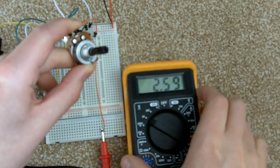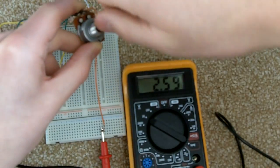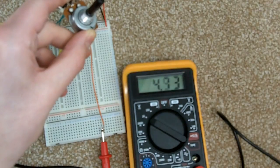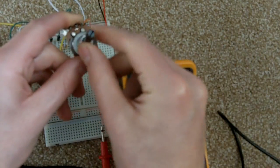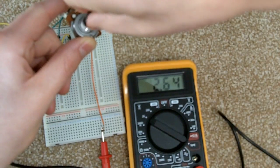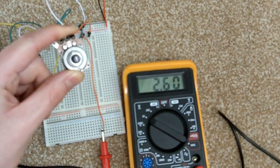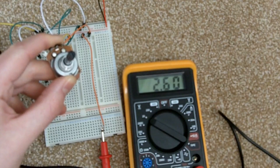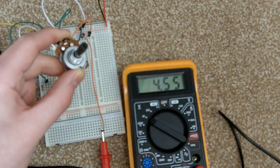That's 2.59. All the way to the left is 0 volts. All the way to the right is essentially 5. And then the middle kind of gets you around 2.5. That's pretty much all the electronics worked out.